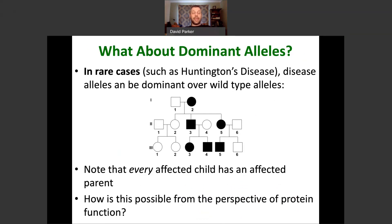What about dominant alleles? There are rare cases where an allele can function in a dominant way over the wild type allele — Huntington's disease is an example. In a human pedigree showing a dominant trait, every affected child has an affected parent. This is a dominant trait: all you have to inherit to get the disease is a single mutant allele that acts dominantly, which is why it's passed from every generation to the next.